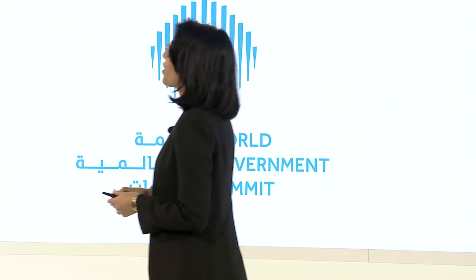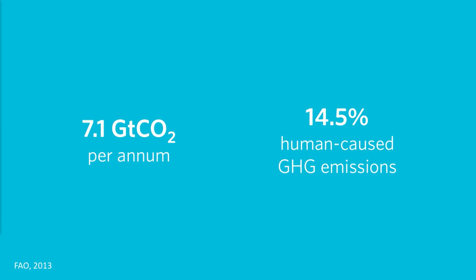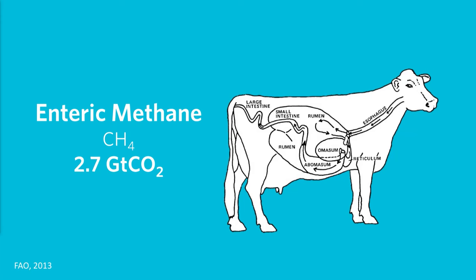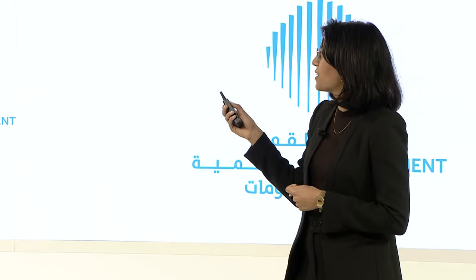Animal agriculture is responsible for 14.5 percent of all human-caused greenhouse gas emissions. This is largely because of methane, which comes from the guts of ruminant animals — sheep, goats, and cattle all produce methane. Of that 7.1 gigatons, about 2.7 gigatons — roughly 40 percent — comes from the guts of these animals through their burps and farts, and we're trying to figure out ways to reduce that methane, but it's very hard.